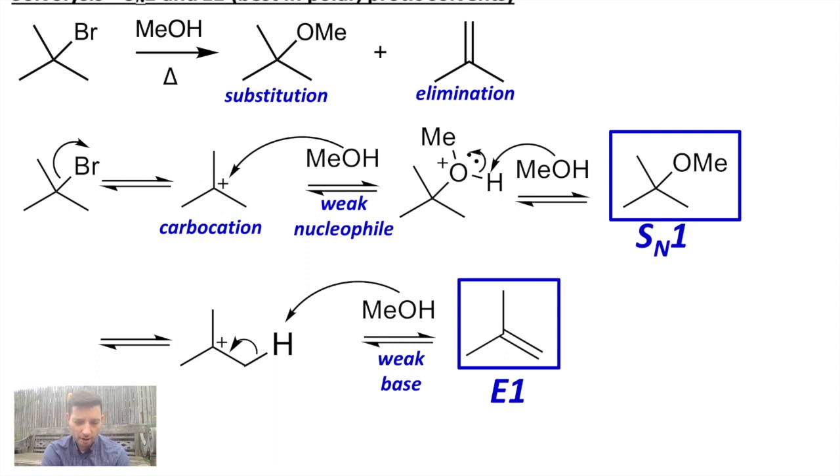So SN1 and E1 products often occur together. The main thing is that they form from a carbocation, which is only able to form if the other reactant is fairly weak. So neutral, not negatively charged, and a weak conjugate to all the strong things we've been looking at.